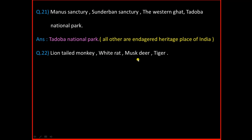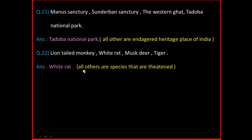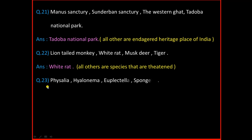Question Number 22: Lion-Tailed Monkey, White Rat, Musk Deer, Tiger. And the answer is White Rat. The reason is all others are species that are threatened.